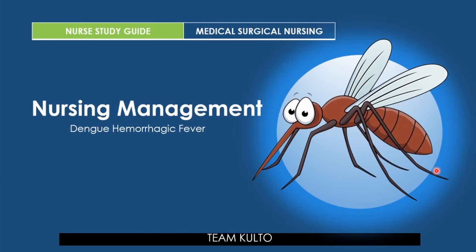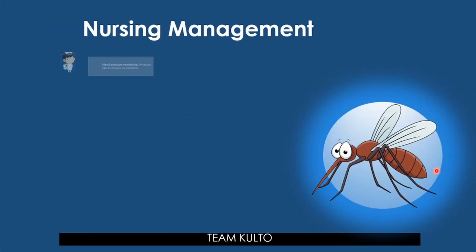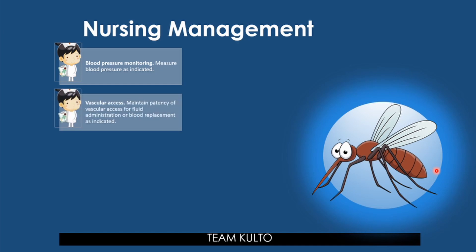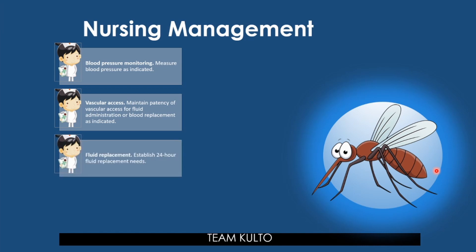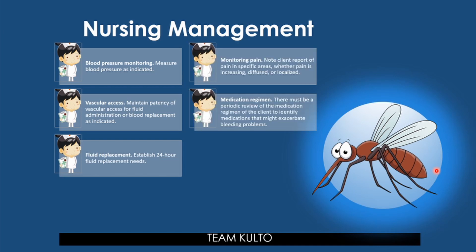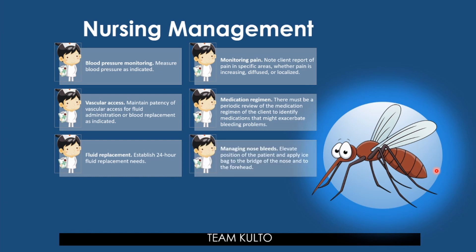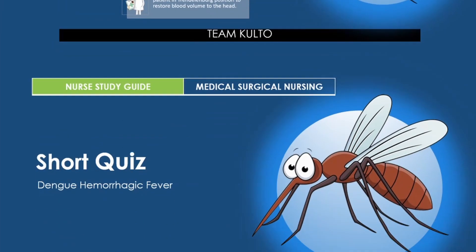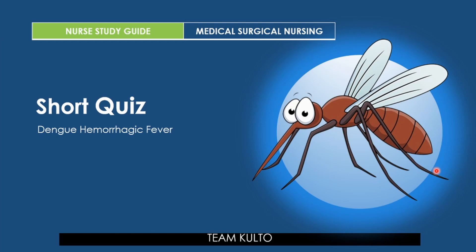Nursing management includes: blood pressure monitoring as indicated; pain monitoring — noting client reports of pain, whether increasing, diffuse, or localized; maintaining vascular access for fluid administration or blood replacement; periodic medication regimen review to identify drugs that may exacerbate bleeding; fluid replacement; and managing nosebleeds by elevating the patient's position, applying an ice bag to the bridge of the nose and forehead. The Trendelenburg position may help restore blood volume to the head. Now we have a short quiz — ten items in five minutes.